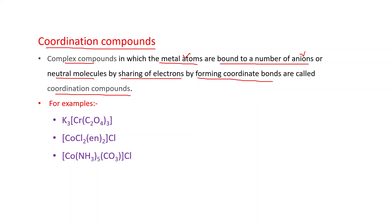That's why these are known as coordination compounds. These are some examples: K3[Cr(C2O4)3], [CoCl2(en)2]Cl, and [Co(NH3)5CO3]Cl. In this chapter, we will discuss the details of these compounds.